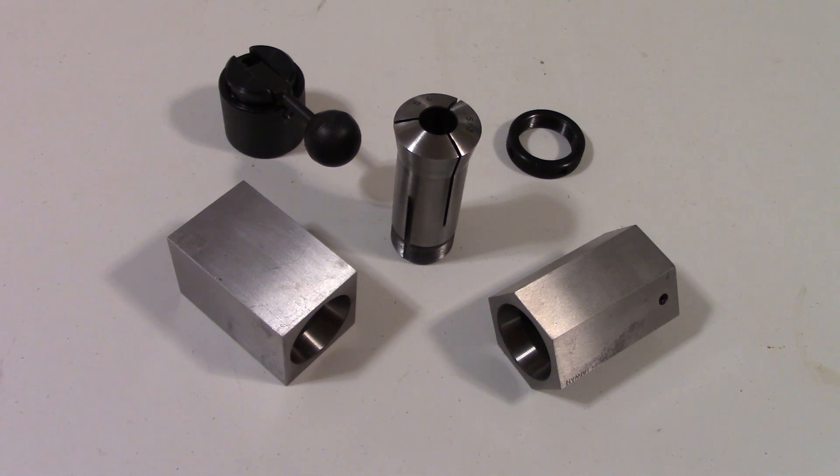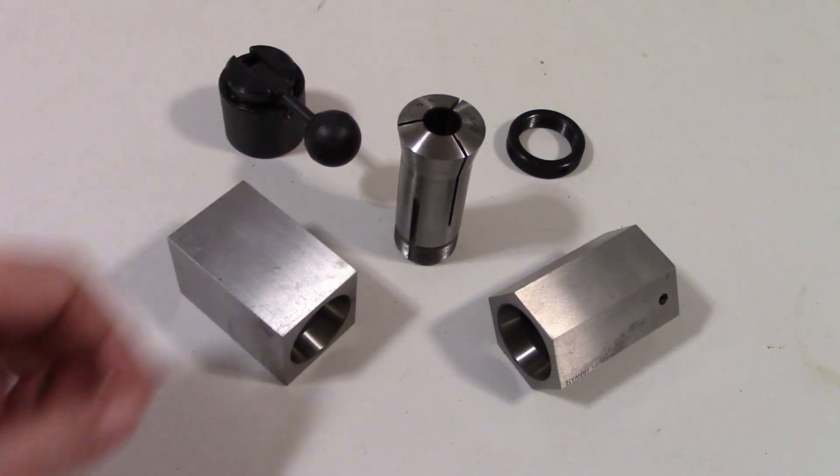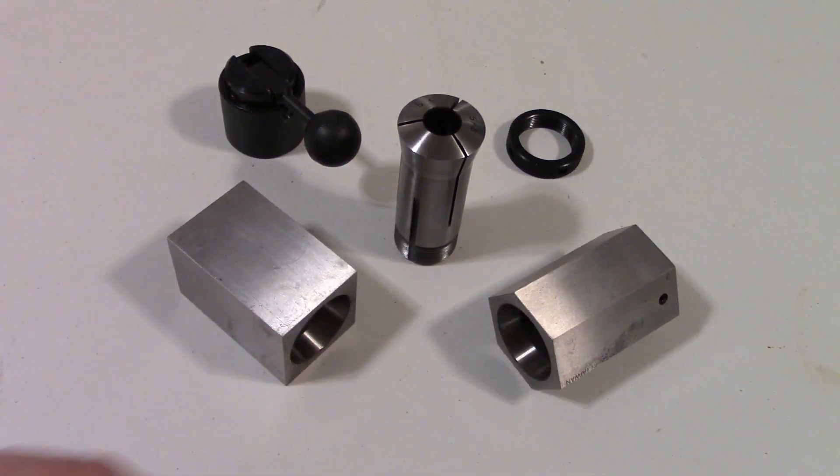Collet blocks are a great way to quickly index a part that's held on a 5C collet. Blocks are available commercially with 4 and 6 sides, which lets you get the most commonly needed indexings: 2, 3, 4, and 6.